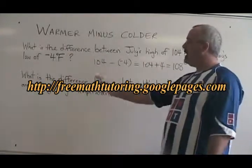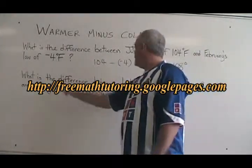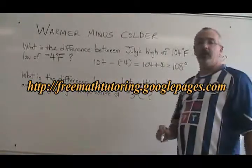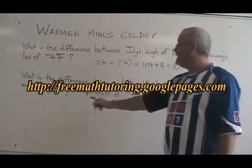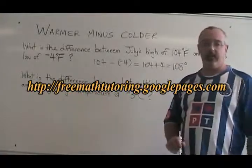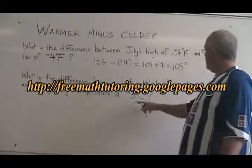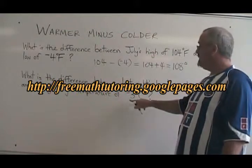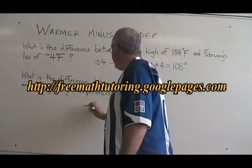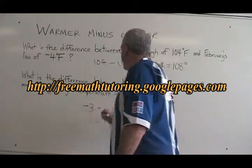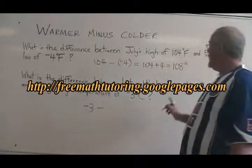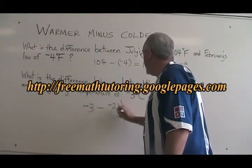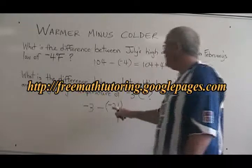The second problem says: what is the difference between last night's low temperature of minus 21 degrees Celsius and today's high temperature of minus 3 degrees Celsius? The warmer temperature between those two — you have to be careful — is minus 3, so I write it first. Then I put a minus sign, and then I write the colder temperature, which is minus 21. I have to remember to include its sign.